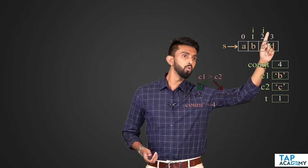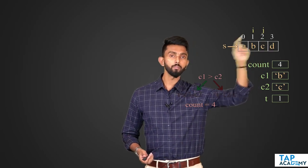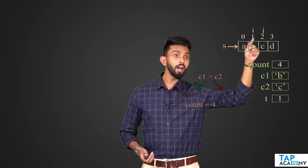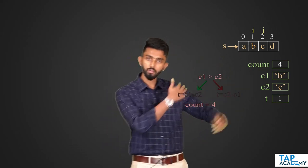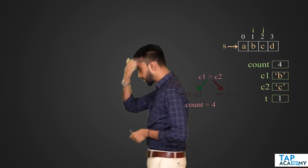When will you stop? In the next iteration, I will move forward and J will come backward, so I will become greater than or equal to J. As long as I is less than J, keep continuing. That is the entire concept.